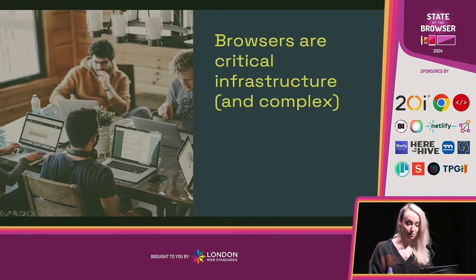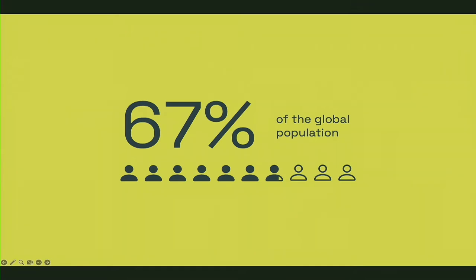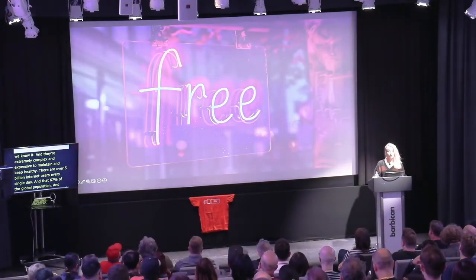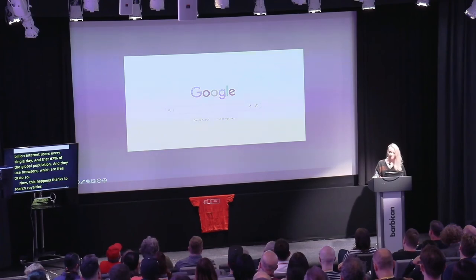Browsers are extremely complex and expensive to maintain and keep healthy. There are over 5 billion internet users every single day — that's 67% of the global population — and they use browsers, which are free, to do so. This happens thanks to search royalties that fund browsers, kind of like an unofficial tax. It makes sense to use search for this because search engines get most of their value from the web, so paying back should help to keep the web thriving.